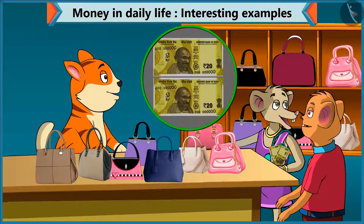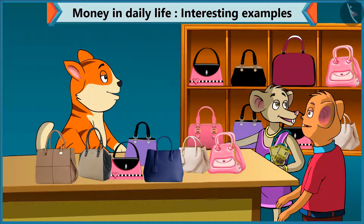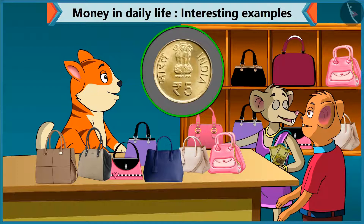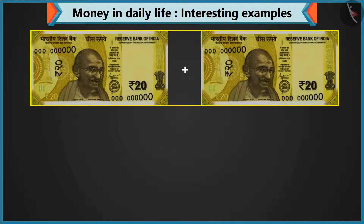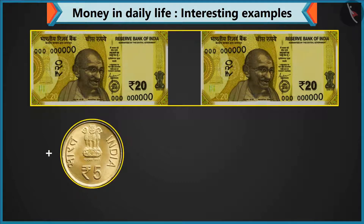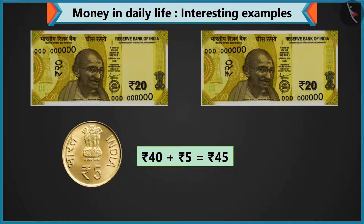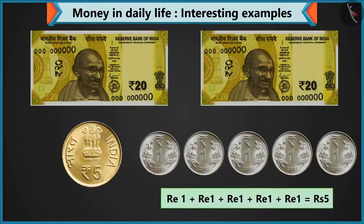I have 2 notes of 20 but no 10 rupees note. Never mind, give 2 coins of 5. I have only 1 coin of 5. So look, 40 rupees made by adding 2 notes of 20, and adding a coin of 5 makes 45 rupees. And to make 5 rupees, you have coins of 1. Yes, I have lots of 1 rupee coins. Okay, so give me 5 coins of 1 rupee. There are 5 coins of 1 rupee and it will make 5 rupees.